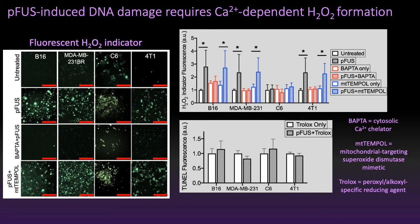We then looked at hydrogen peroxide, because mitoTEMPO is a superoxide dismutase that converts superoxides to hydrogen peroxide, so we thought this might be the next step in the process explaining why we did not see a decrease. Using a hydrogen peroxide assay, treatment did indeed increase hydrogen peroxide levels. When BAPTA was added, treatment did not increase hydrogen peroxide levels, and when mitoTEMPO was added the same increase was seen, suggesting this was the pathway. When we added Trolox, a hydrogen peroxide inhibitor, we did not see any increase in TUNEL from treatment, confirming that hydrogen peroxide is the final step causing the DNA damage.